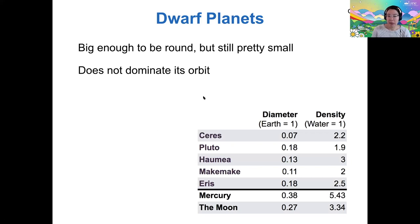So here's some examples of dwarf planets. Pluto is probably the one you've heard of, but there are a lot of other cool ones. There's Ceres, Haumea, Makemake, and Eris. And I'm just comparing these here to some characteristics of Mercury and the moon. So you can see all of these are rather small objects. The dwarf planets are much smaller than even our moon, but also compared to Mercury, our smallest planet.